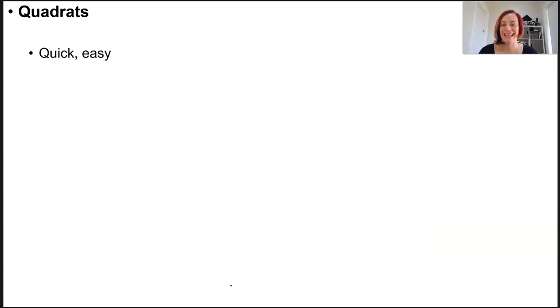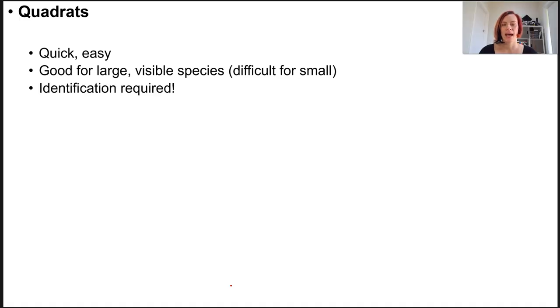Quadrats are nice, quick, and easy. They can be accurate for large specimens or species, but really difficult with small ones or more mobile ones. It's challenging if the species is not actually on the surface of the ground. You might be talking about plants where one plant has many runners underneath the soil, and you can't tell whether those two organisms are part of the same.